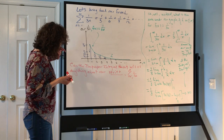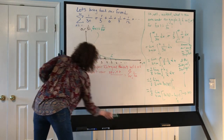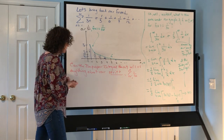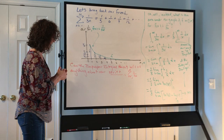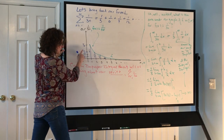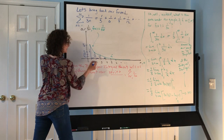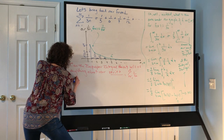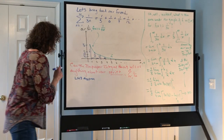Let's think about this by considering Riemann sum approximations. If we do a left-hand sum approximation with Δx = 1 — which is already set up for us since the distance between our n values is 1 — we can see what happens.